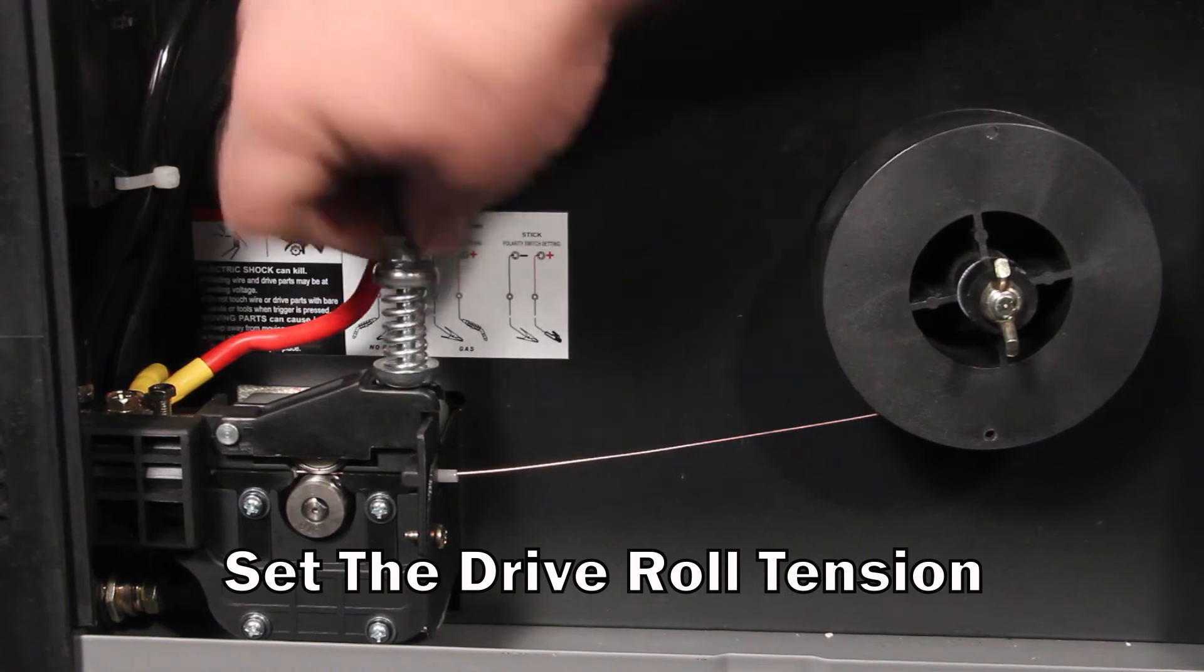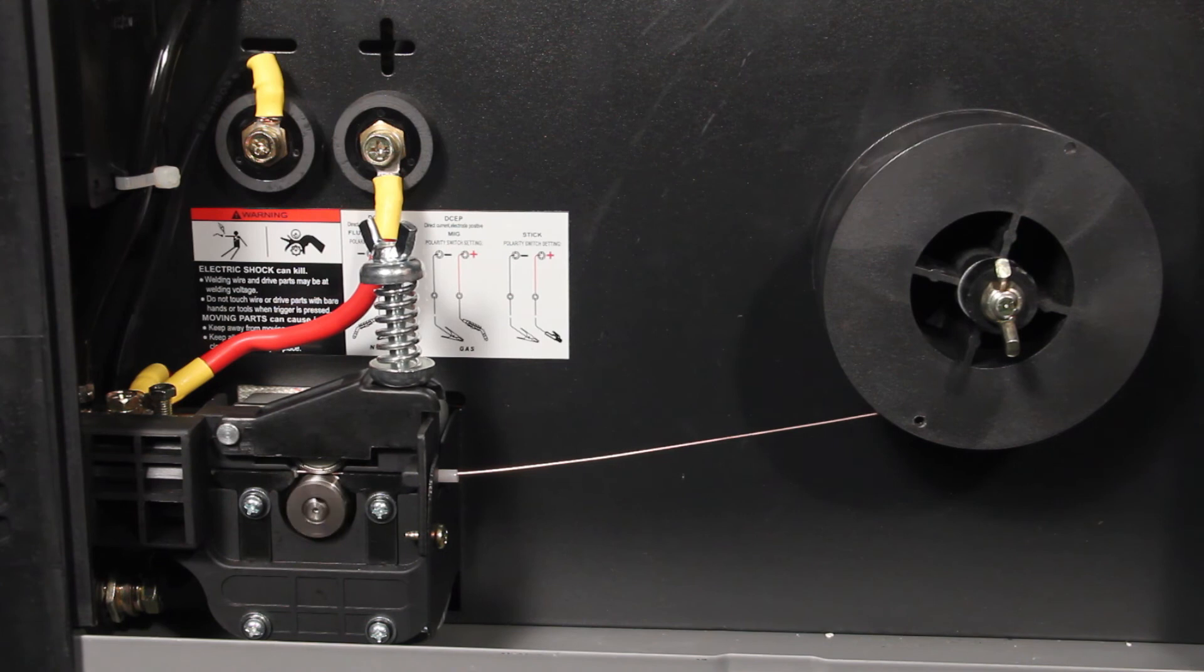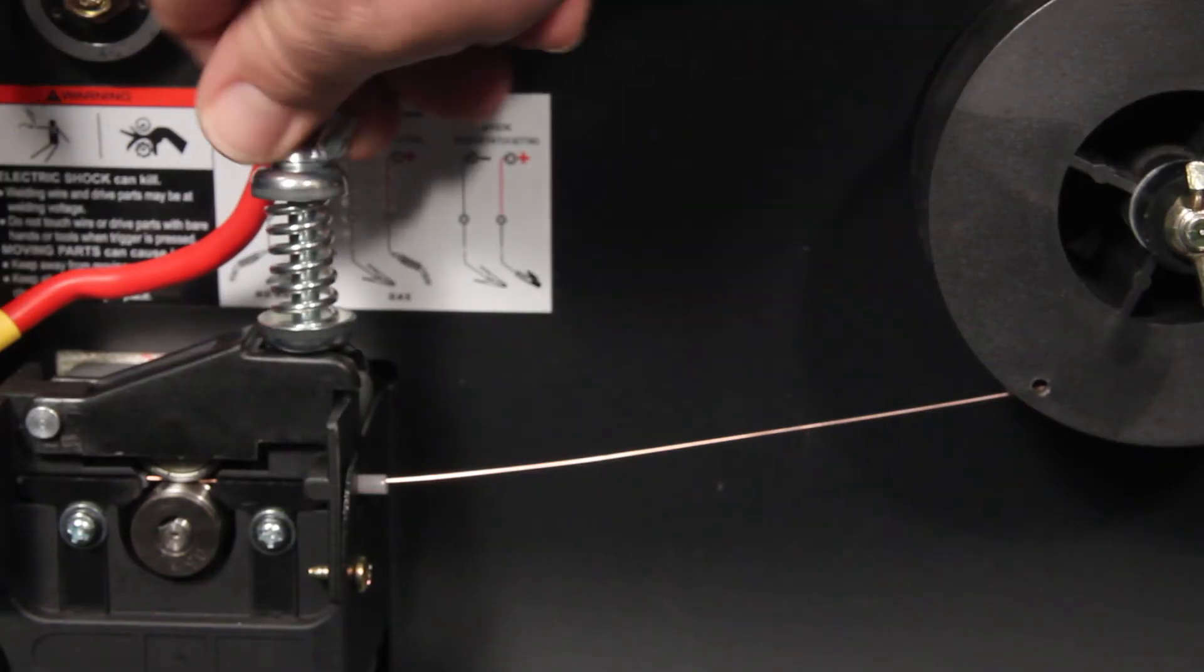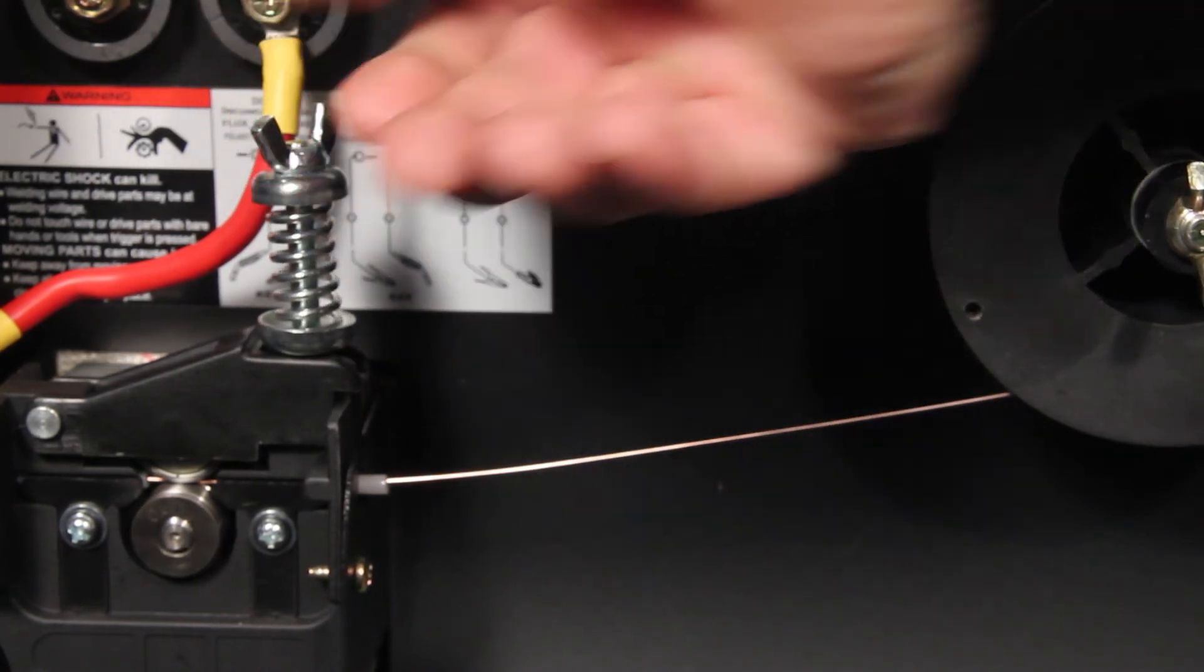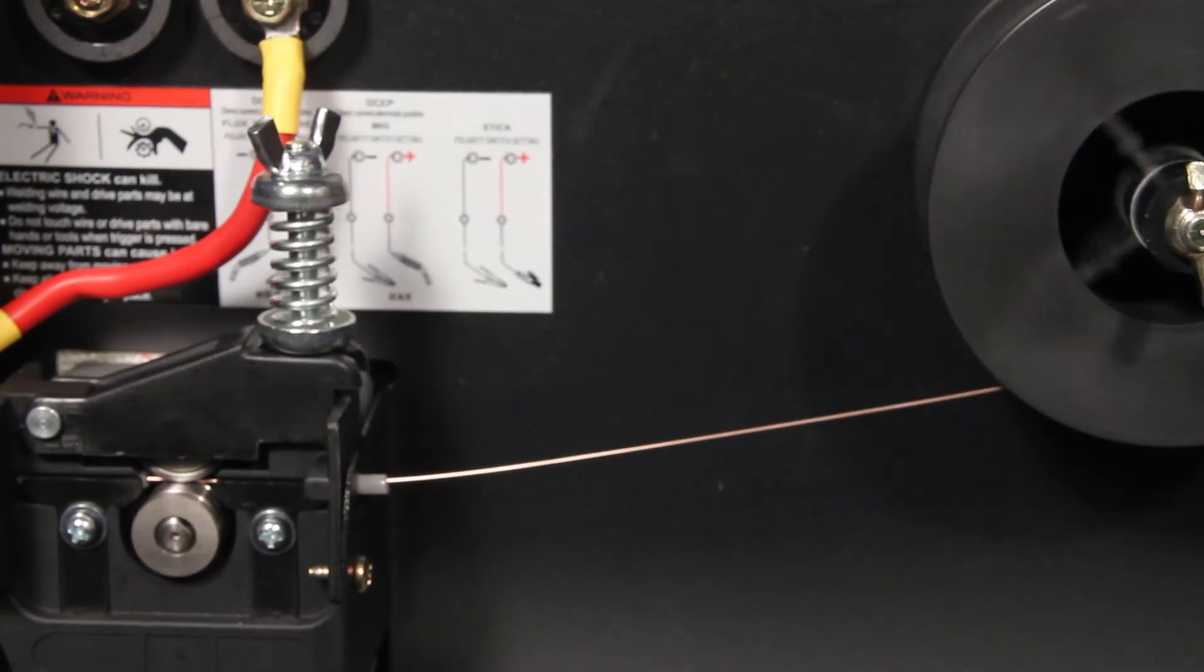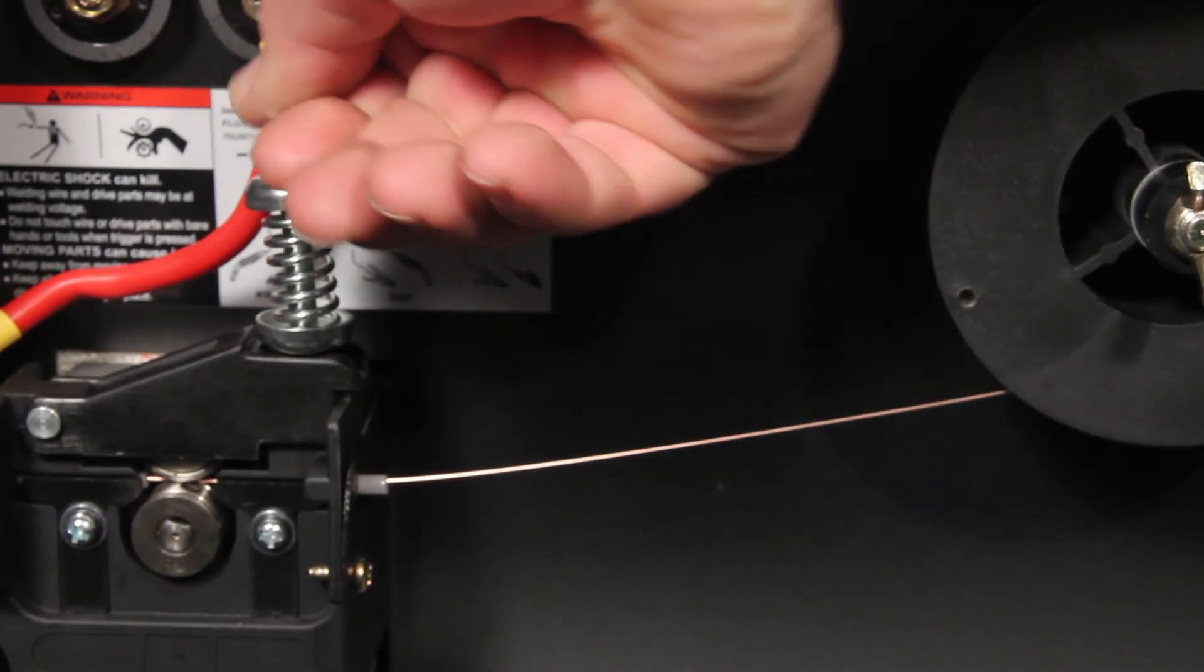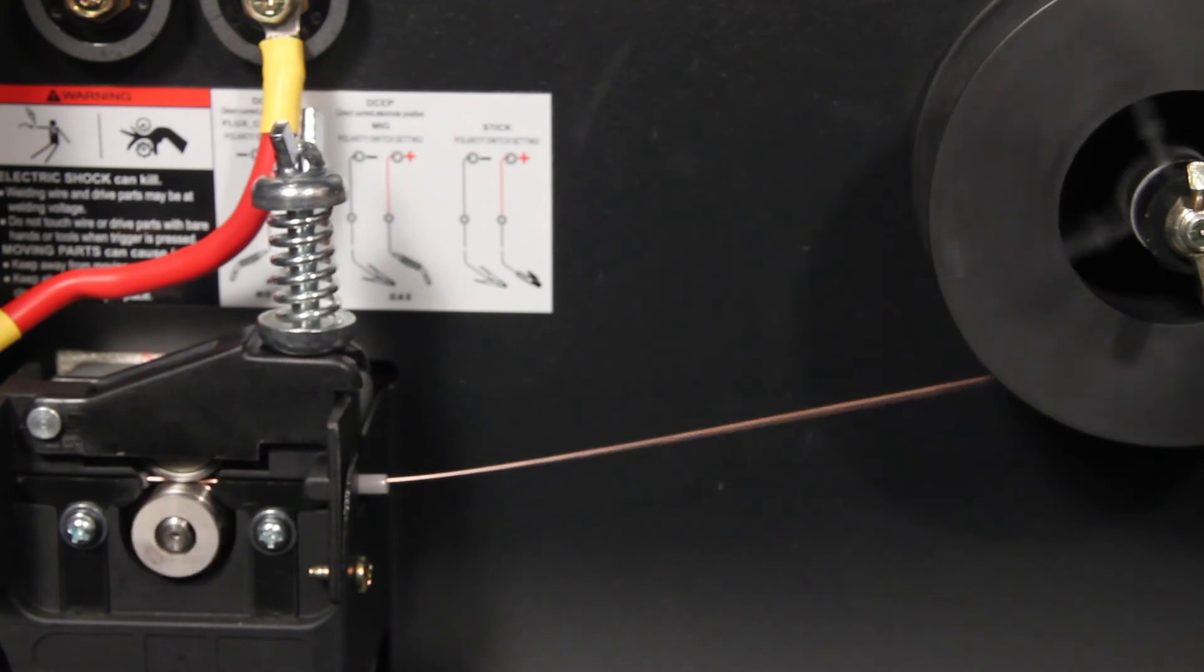To set the drive roll tension, loosen the drive roll tension control until the drive roll spins but the wire doesn't feed. Tighten the tension control by turning it one half turn. Pull the trigger while watching the wire in the drive roll. Check for slippage. If the wire is slipping, repeat the process of one half turn on the tension control and check for slippage. Repeat this until the wire feeds continuously.